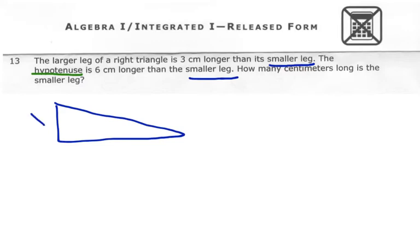The smaller leg I'm going to call x because that's what we don't know and that's what it is referencing on both of those comparisons. So that's going to be our x. And then the larger leg, that would be over here, is 3 longer than the smaller. So that would be x plus 3. The hypotenuse is 6 longer, so that would be x plus 6.